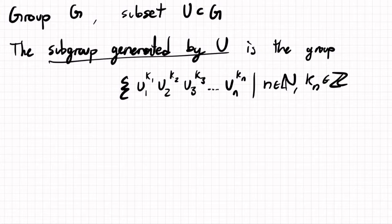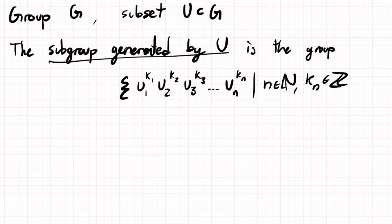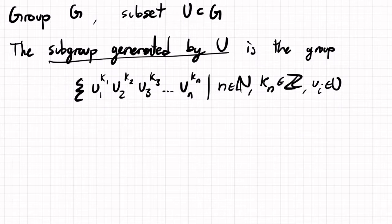When we have something like U₁^(-3), that's U₁ inverse cubed. All of the Uᵢ are in U, and the product can be as long as you want—it just has to have elements coming from U.